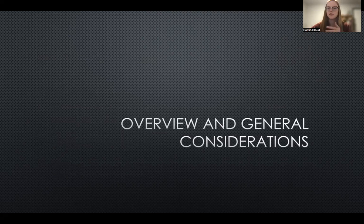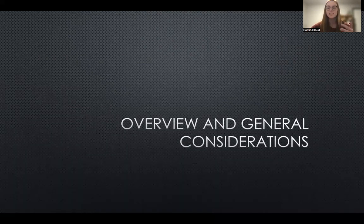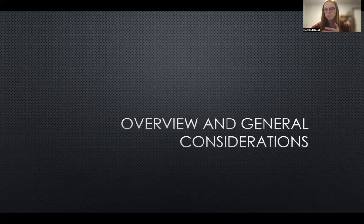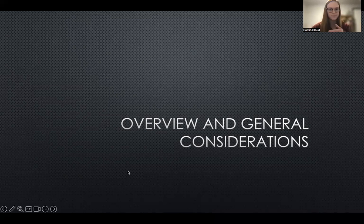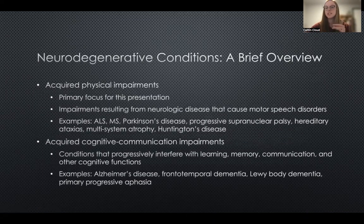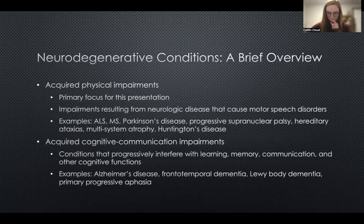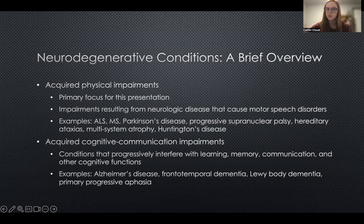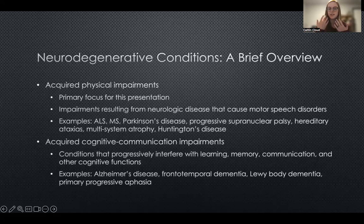First, an overview of neurodegenerative diseases and some general considerations across different populations. When working with patients or clients who have any type of degenerative condition — we'll move on later to talk about some condition-specific considerations, particularly ALS and multiple sclerosis — there are two main types of degenerative conditions. The first is acquired physical impairments: impairments resulting from neurologic disease that ultimately affect movement and cause motor speech disorders, specifically changes in the motor ability to produce speech.